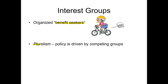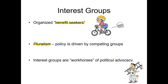This is what we call the system of pluralism in America. Policy is driven by these competing groups, and these interest groups are what we might call the workhorses of political advocacy because they're working the hardest to get the attention of government, to try to get benefits for their group. Anyone in America has the right to join an interest group and pool resources to increase power, potentially influencing government to pass policy that is going to help you and your group.